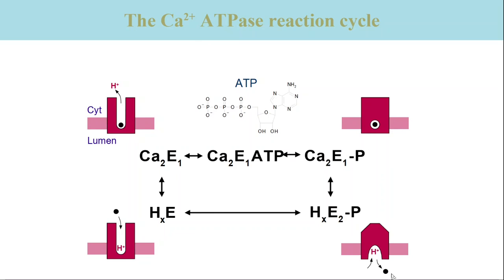In the following step, calcium is released to the lumen from low-affinity binding sites. The calcium binding sites become protonated from the luminal side and the phosphoenzyme converts to the E2P form. Dephosphorylation completes the reaction cycle.